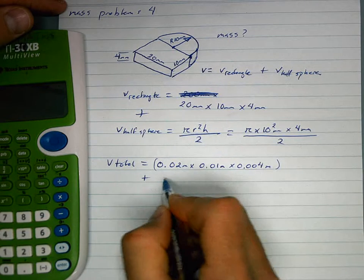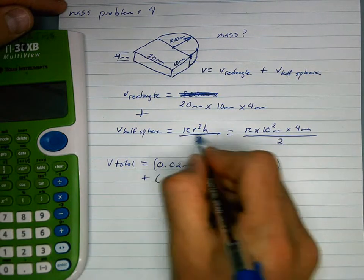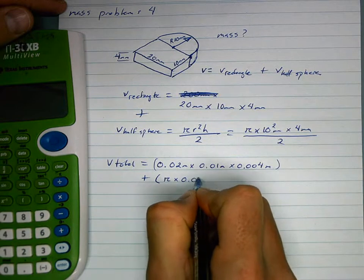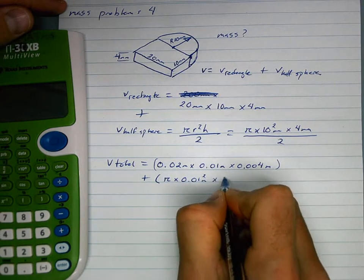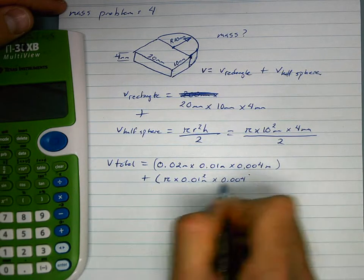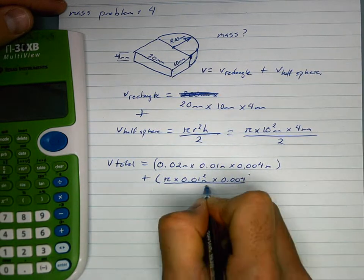Plus, we need to add in the bottom part, so we get pi times 0.01 squared times 0.004, divide that by 2.